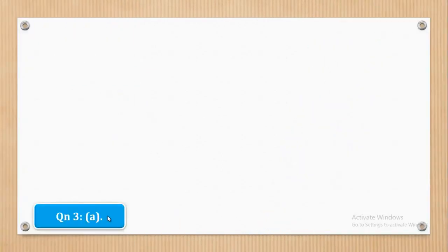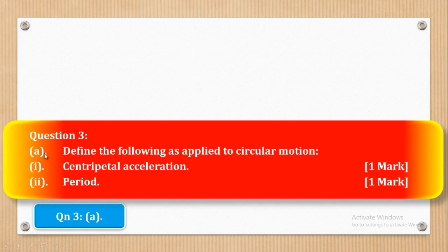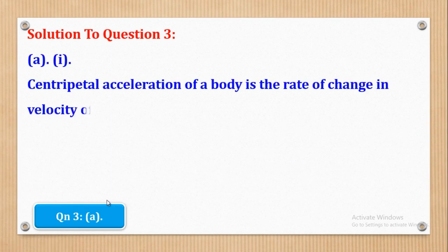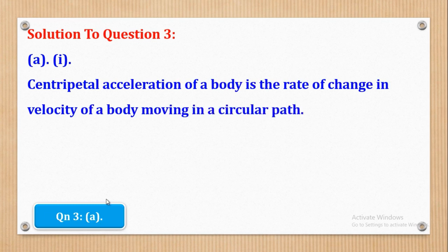Now we are going to start with Question 3, Part A. Part A says: define the following as applied to circular motion — Roman 1, Centripetal Acceleration, for one mark, and Roman 2, Period, also for one mark. We shall start with A Roman 1 where they wanted you to define centripetal acceleration. We shall say: centripetal acceleration of a body is the rate of change in velocity of a body moving in a circular path.